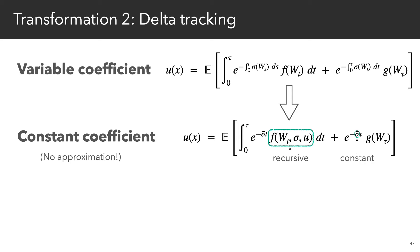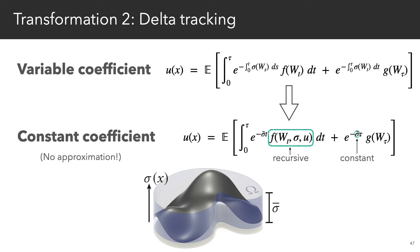Sigma bar is a free parameter which we set to be the difference between the maximal values of sigma over the entire domain. Now, just as in volume rendering, we've essentially turned our original heterogeneous medium into an equivalent homogeneous one.